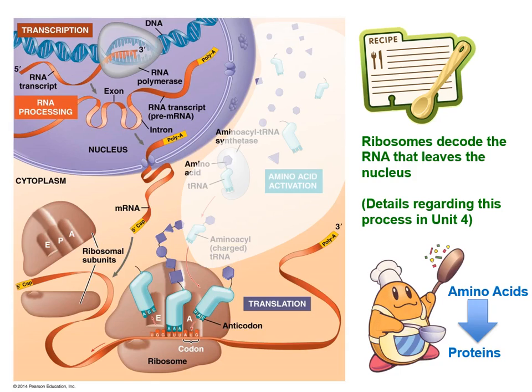The ribosome in this analogy is taking the recipe and decoding it, much the same way that a chef would take a recipe, read it, and mix the raw ingredients. Except in this case, the raw ingredients are amino acids and the finished product is a specific protein with a particular amino acid sequence, which should allow it to fold into a specific and functionally important shape.